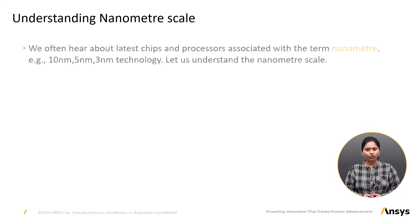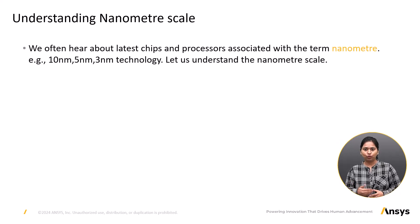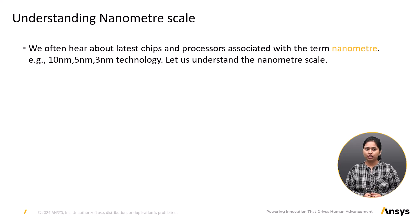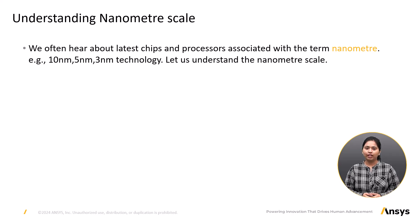We often hear about the latest chips and processors associated with the term nanometer, such as 10 nanometer, 5 nanometer, 3 nanometer, etc. But what does this nanometer mean and why is it significant in chip technology? A nanometer is a unit of length used to measure extremely small objects — it is one billionth of a meter.